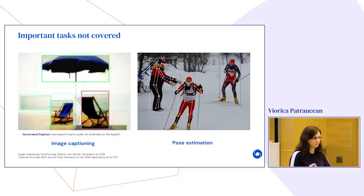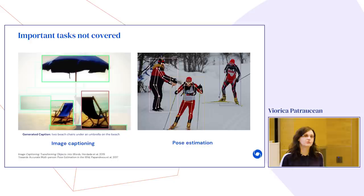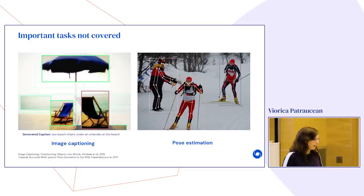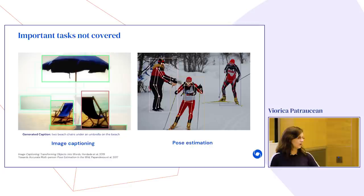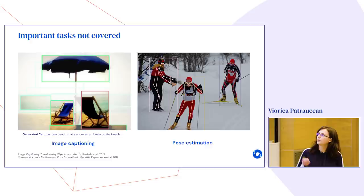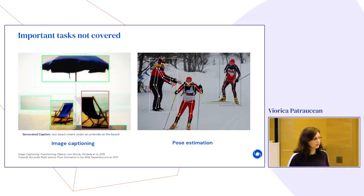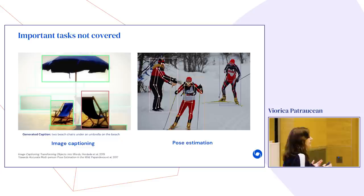Other important tasks for scene understanding that we won't have time to cover include image captioning — where a system generates a language description of an image such as 'two beach chairs under an umbrella on the beach.' This can be stated as a classification problem choosing from possible answers, or the system can generate a free-form description, which is harder but more meaningful. Another important task is pose estimation, where we define keypoints on the human body and detect and track them to learn about people's positions in the scene.